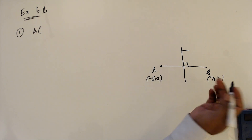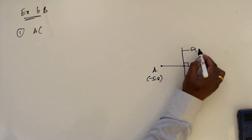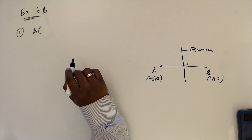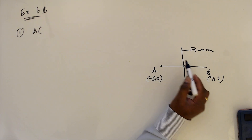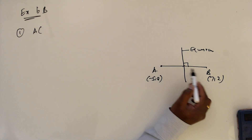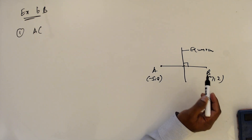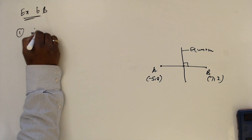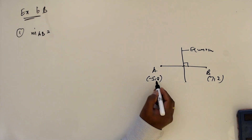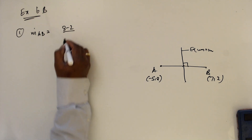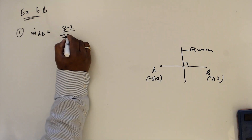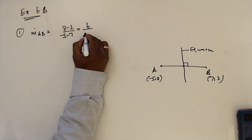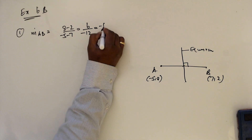As discussed earlier, to find the equation we need the gradient of this line. We can find the gradient of the perpendicular bisector if we know the gradient of AB. So gradient MAB equals (8 minus 2) divided by (minus 5 minus 7), which is 6 over minus 12, giving minus one-half.